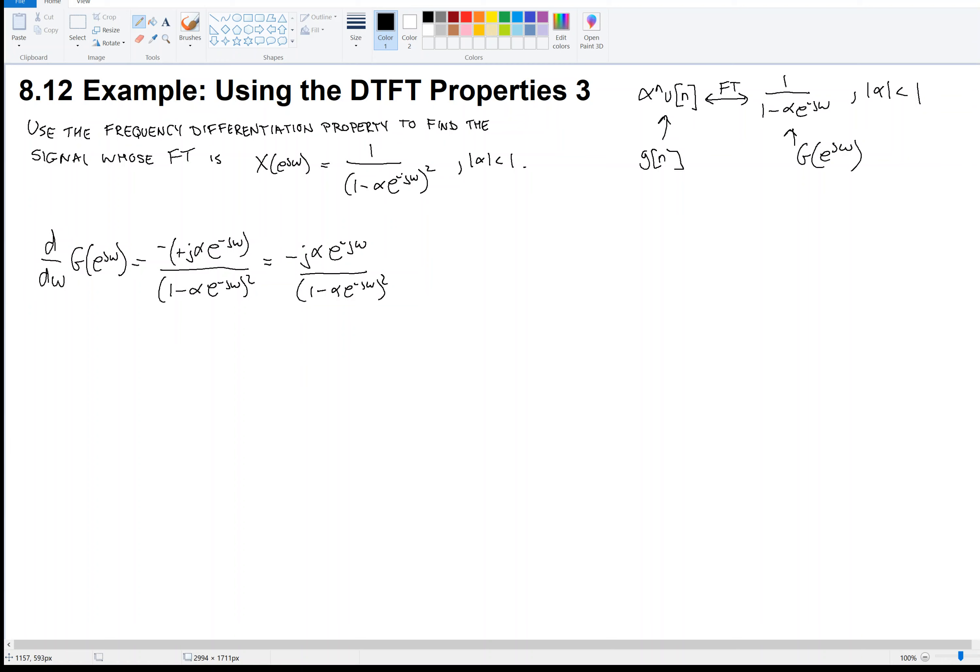Let's remember the frequency differentiation property. It says that n·g[n] has Fourier transform j·(d/dω)G(e^(jω)). That's the differentiation in frequency property. That's kind of what we have here, but we need a j on this side. So let's multiply both sides by j.